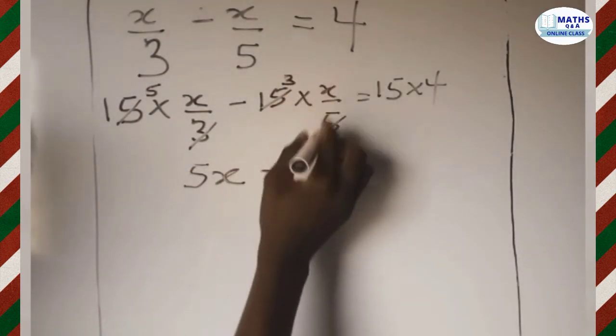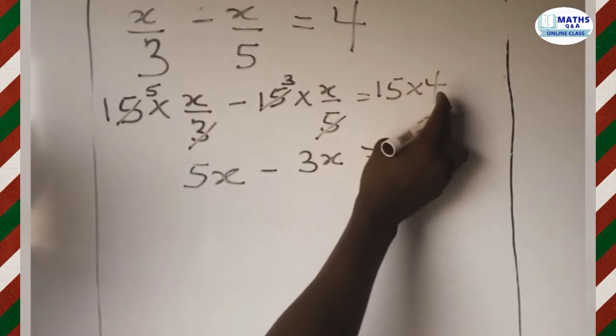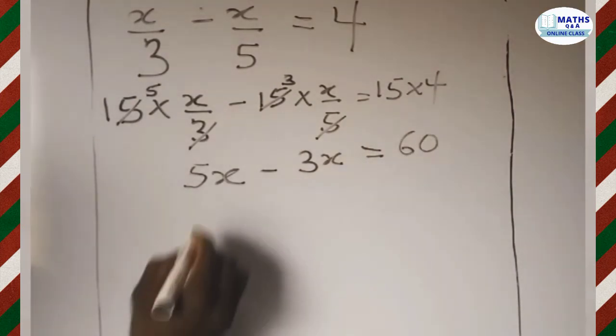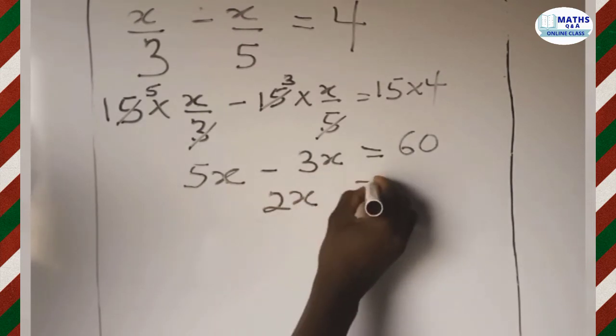5x minus 3x gives 2x, equal to 15 multiply 4 which gives 60. So we have 2x = 60.